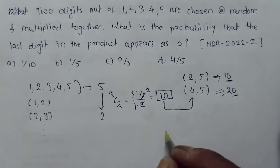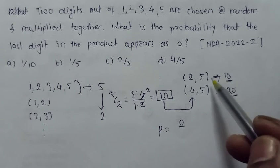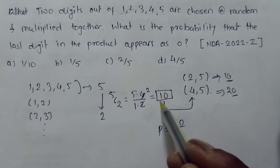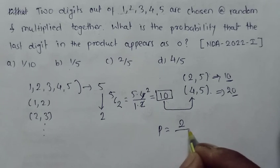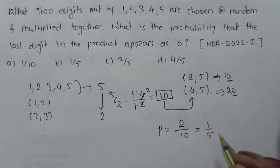So what is my answer? The probability equals 2, these are the two pairs, out of these 10 possible pairs, divided by 10, which is nothing but 1/5. So option B is correct. Thank you.